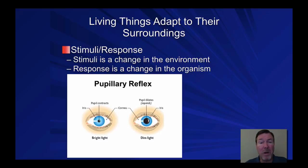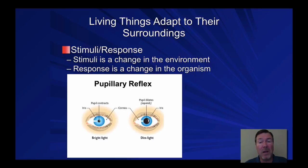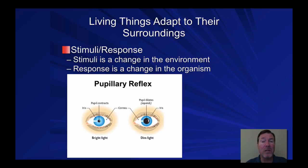All living things respond to stimuli. Your five senses — touch, taste, sight, hearing, and smell — are all responses to stimuli. There's a change in the environment and your senses pick it up, sending a signal to your brain that something is happening. There are also pheromonal responses that you may not be consciously aware of. Plants also respond — a sunflower will turn its flower toward the sun; the changing position of the sun is the stimulus, the plant rotating is the response.